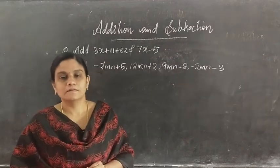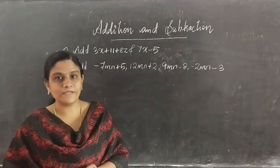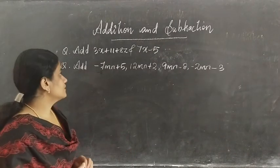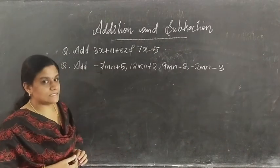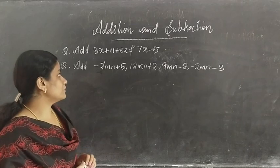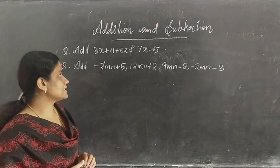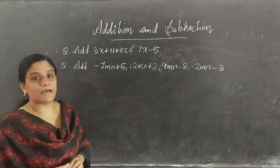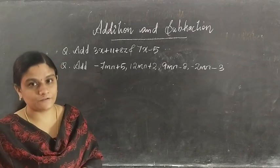So the sum is 10x plus 6. We will see a few more examples. The first question is: add 3x plus 11 plus 8z and 7x minus 5.